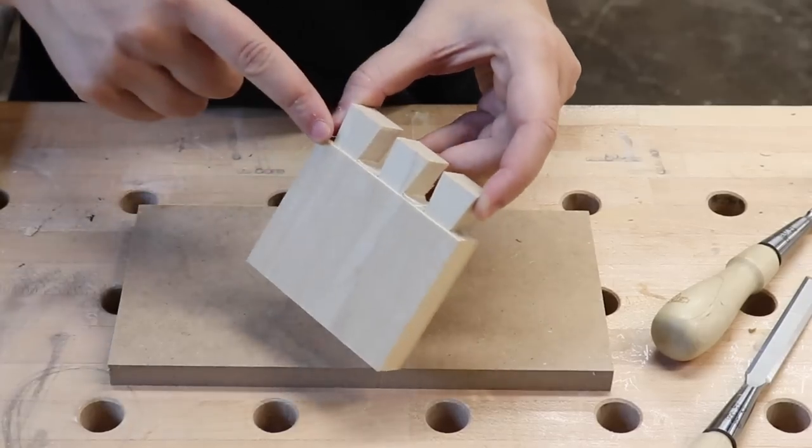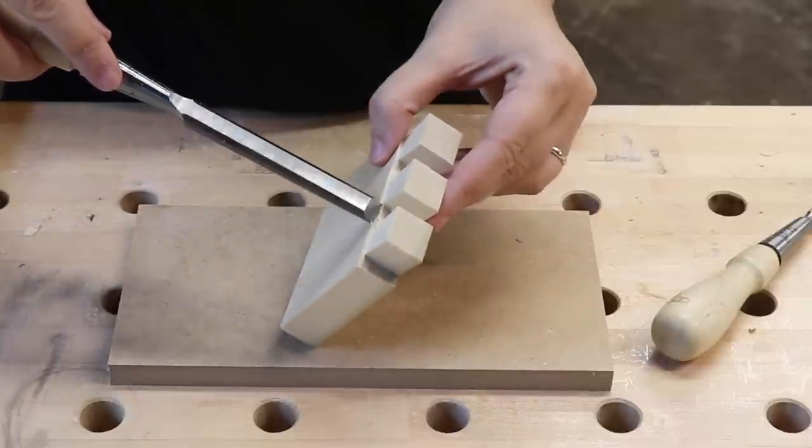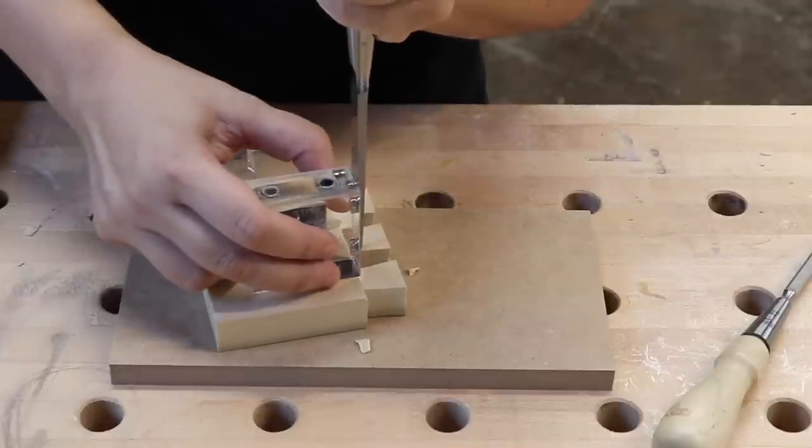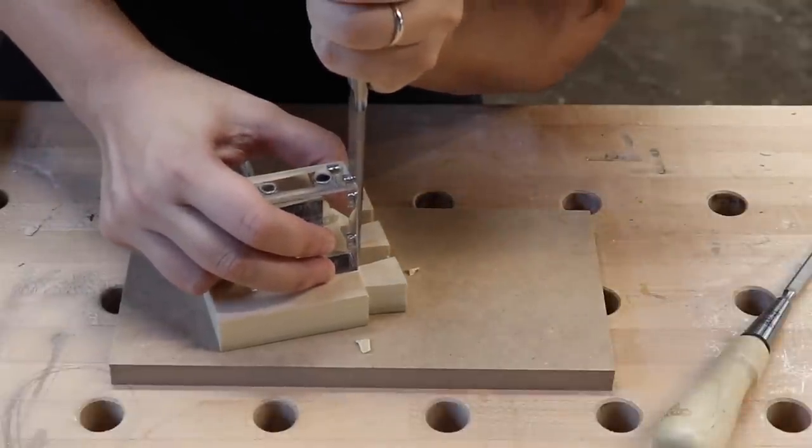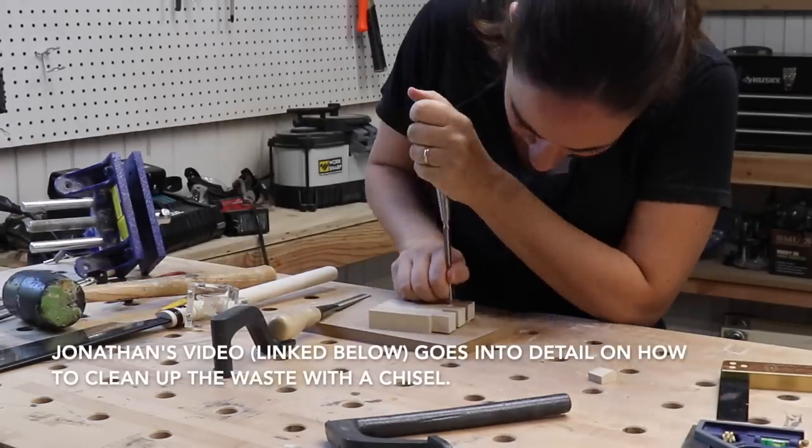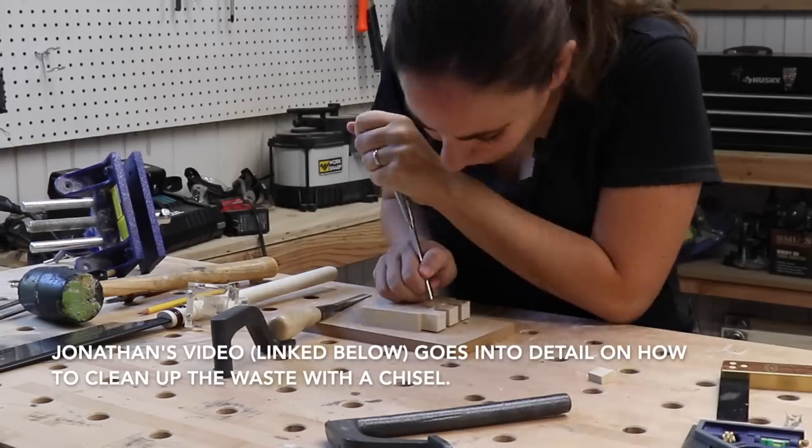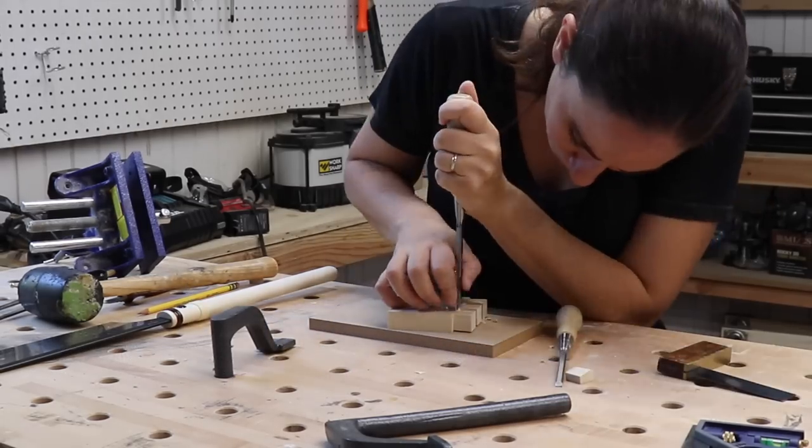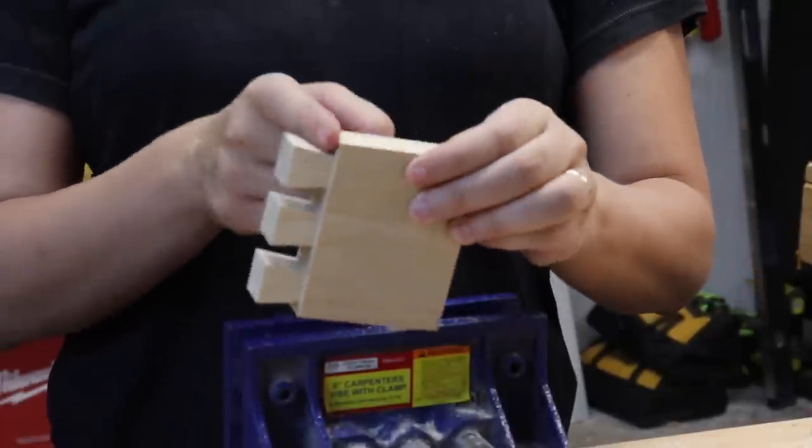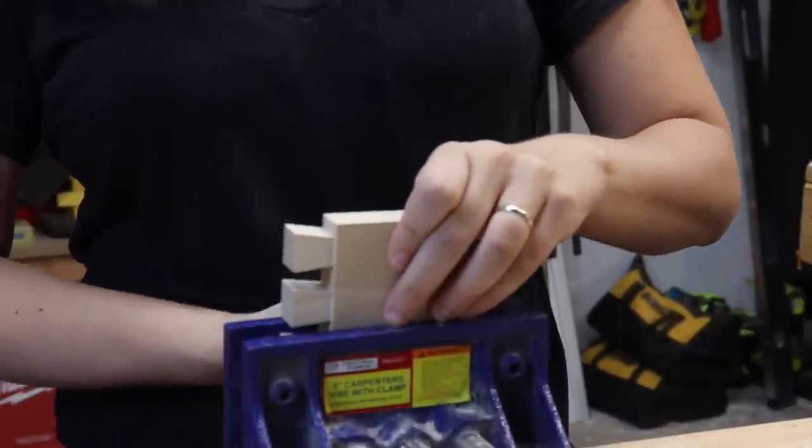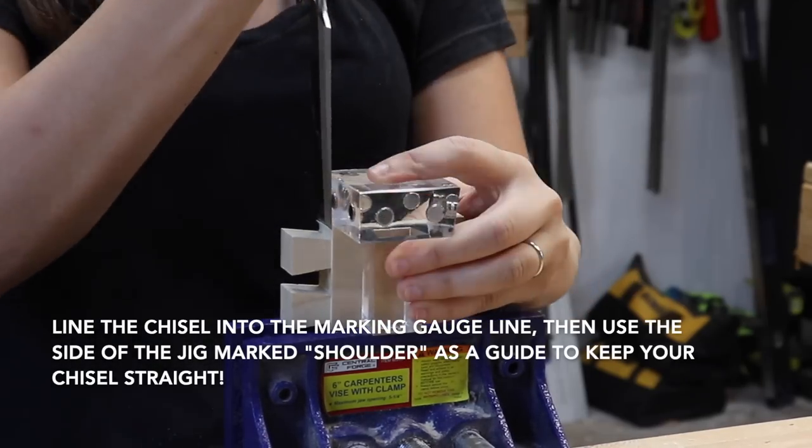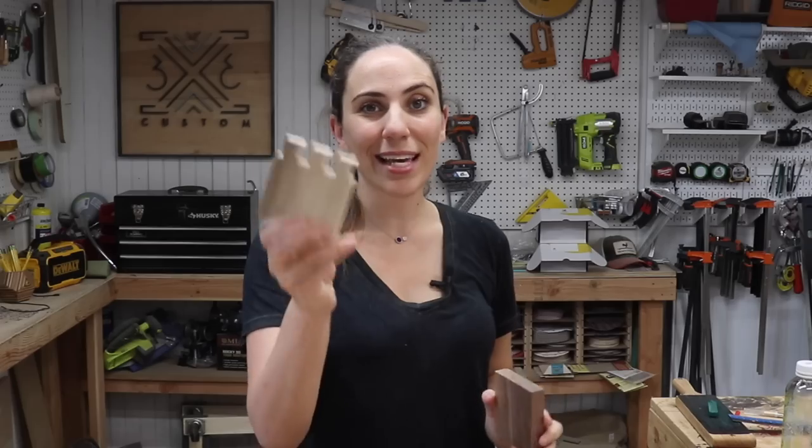Now on to cleaning these up with a chisel. So what's actually cool about making that rabbit is also you can use it to guide your chisel perfectly straight. Also, I can use the jig to keep my chisel straight as well, which is pretty cool. These are all clean, and now I'm just going to clean up the ends over here using the jig. Tails are done. Time to work on the pins.